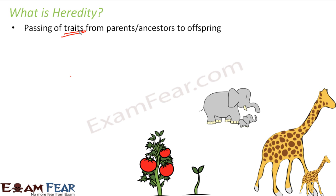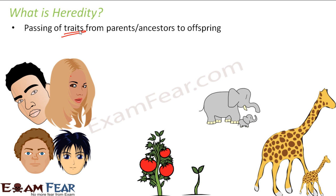Whether you talk of an elephant, a giraffe, or a rose plant — if a new plant comes out of a rose plant, it is definitely going to be another rose plant, not a sunflower or a marigold. The offspring bears a lot of similarity with its parents. Here in this picture, you can see that a couple has two kids. One kid has brown hair, inherited from his mother, whereas the other kid has black hair, perhaps from his father. These features very similar to parents are what we study in heredity.